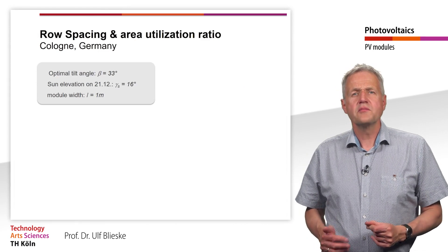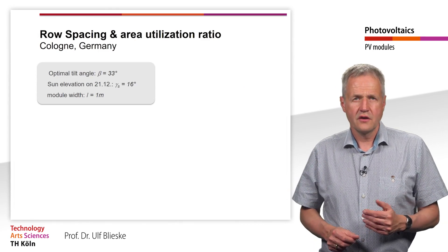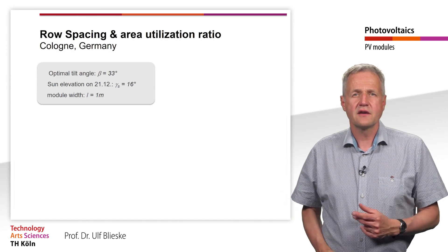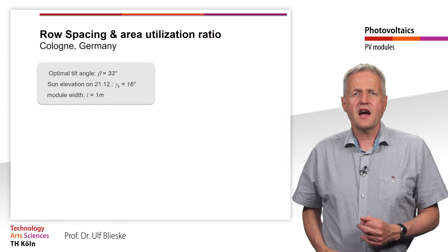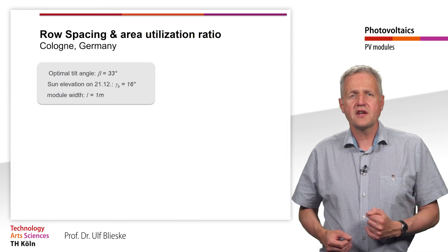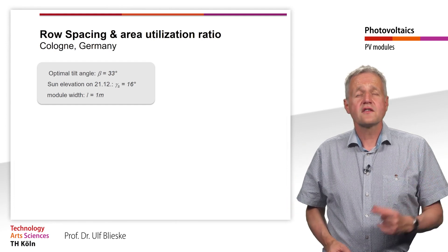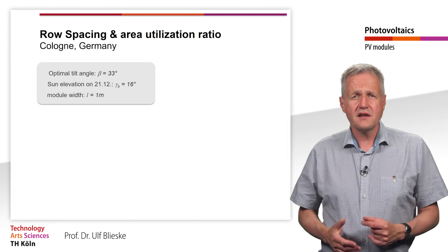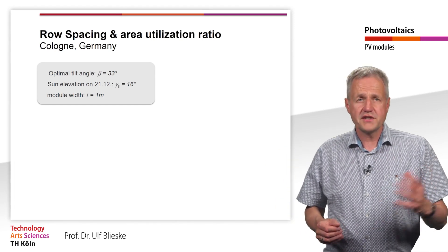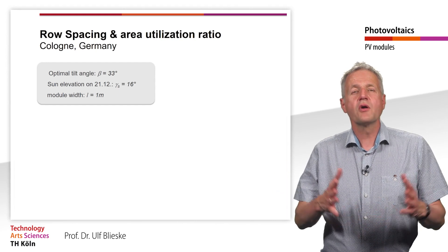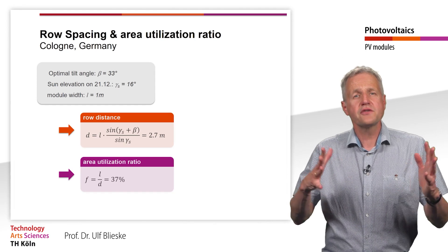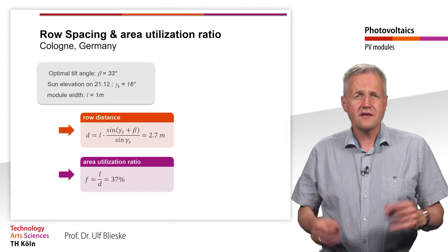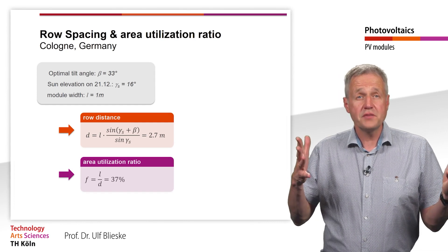What does that mean for a PV plant in Cologne? The optimum tilt angle for south orientation is 33 degrees. The sun's elevation at solar noon on the day of the winter solstice is 16 degrees. Assuming that the modules are mounted in landscape format and have a width of 1 meter, we get an optimal row distance of 2.7 meters and an area utilization factor of 37%. This means that about two-thirds of the available area cannot be used.